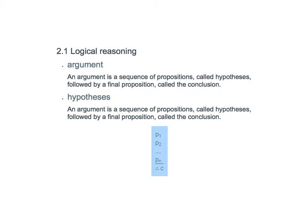In this lecture, we're going to talk about Chapter 2: Proofs. We're going to start with Section 2.1, Logical Reasoning. In this section, we will talk about arguments and the elements of an argument, which are hypothesis and conclusion. We'll also talk about how to prove or disprove the validity of an argument. We start with defining an argument and its elements.